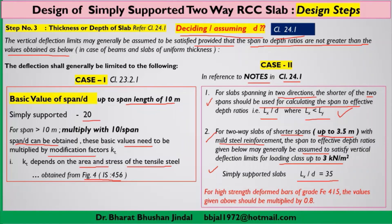If high-strength steel of grade FE415 is used, as is normally the case in practice, the value of 35 is multiplied by a factor of 0.8. So when the shorter span is less than or equal to 3.5 meters and the loading condition is up to 3 kN/m², the LX/D ratio becomes 35 × 0.8. It is important to remember that LX always refers to the shorter span length.